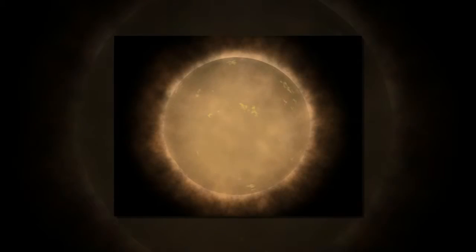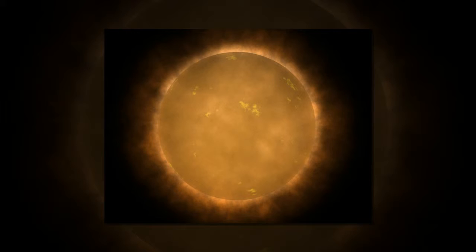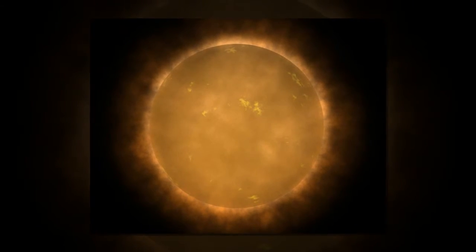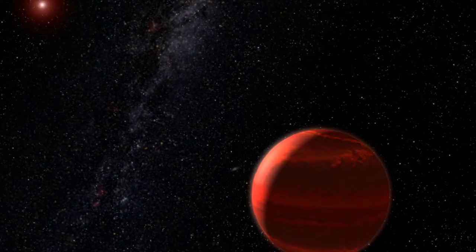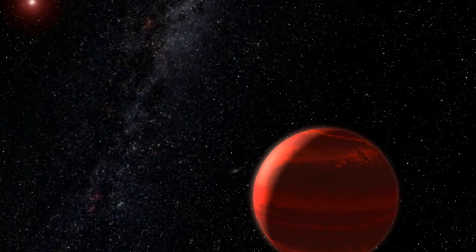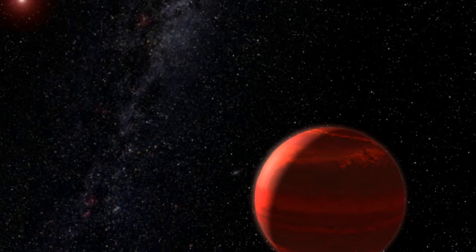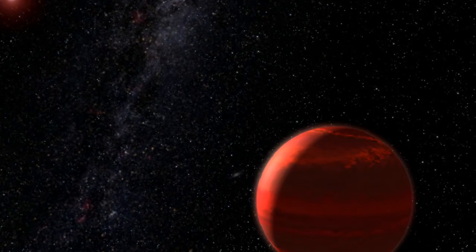Still, this planet is a much closer neighbor than most other potentially habitable exoplanets spotted so far, which tend to be hundreds or thousands of light-years away. One notable exception is Gliese 667Cc, which sits 22 light-years away.